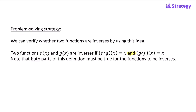If you think about this, it actually makes sense, because what we said is that an inverse has the opposite operations of the original function. So it would make sense that if we compose a function and its inverse, you'd end up with just x, because all the operations would undo each other. That's why it works in the opposite direction also.